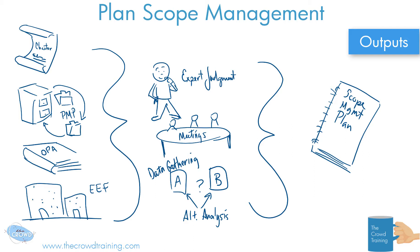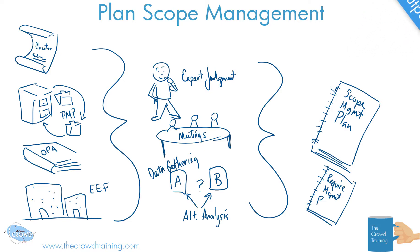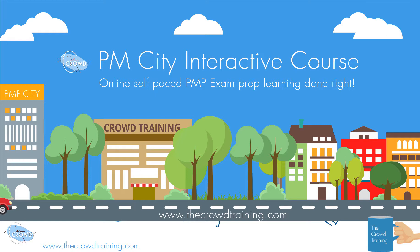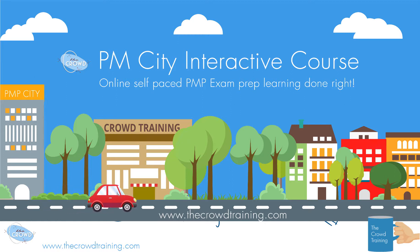Part of scope too, we have a set of requirements that we're going to have to also help manage and deal with. So we might even have a subplan or a variation of this, and that is dealing with the requirements. You have a requirements management plan as well. That's Crowd Training's look at the inputs, outputs, tools, and techniques of the Plan Scope Management process in the sixth edition of the PMBOK.